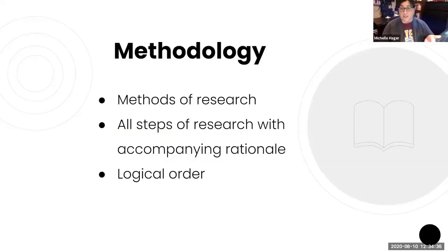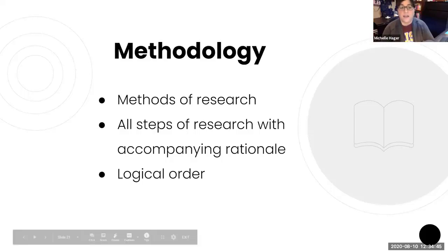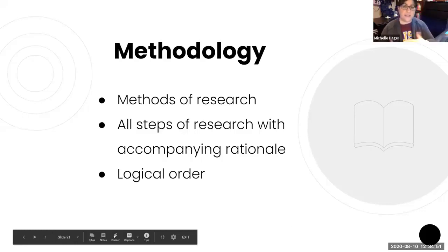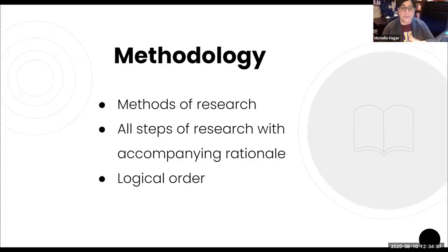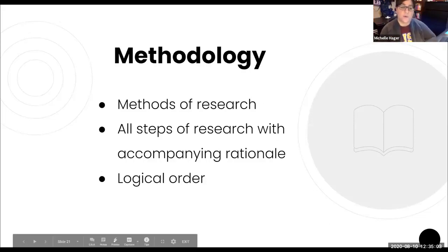The next section of the paper after abstract, intro, lit review is methodology. This is where you go through the methods of your research — what you did in your research project. You should really detail all the steps with the accompanying rationale: not just 'I did X, Y, Z' like a laundry list, but 'I did X because...' and then outline that. Steps should be presented in logical order, or chronological order if the time process is important.